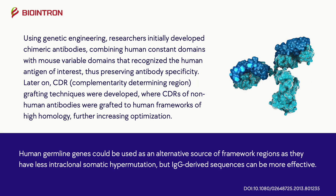Using genetic engineering, researchers initially developed chimeric antibodies, combining human constant domains with mouse variable domains that recognized the human antigen of interest, thus preserving antibody specificity.